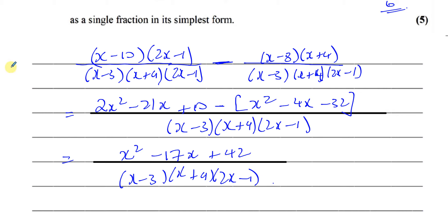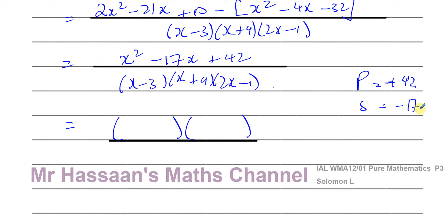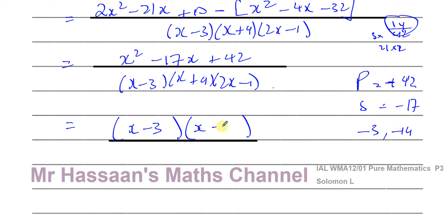I'll keep the denominator as is for now, looking for common factors. I'll try to factorize the numerator so I can cancel any common factors. I need two numbers that multiply to give positive 42 and add to give negative 17 — so both negative. Thinking of factors of 42: 3 times 14 is 42, and 3 plus 14 is 17. So the numbers are negative 3 and negative 14, giving factors x minus 3 and x minus 14.